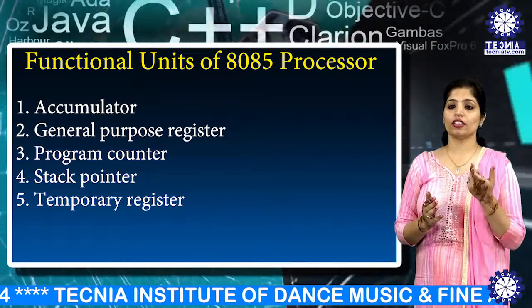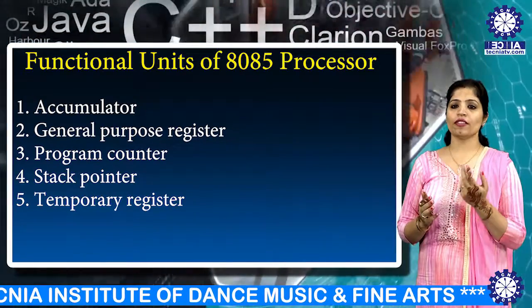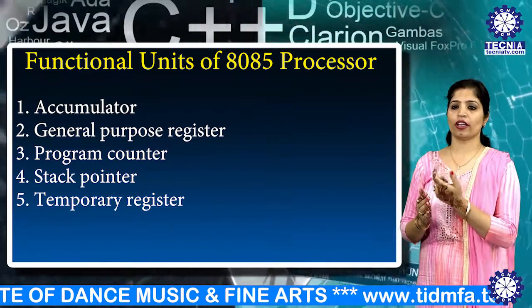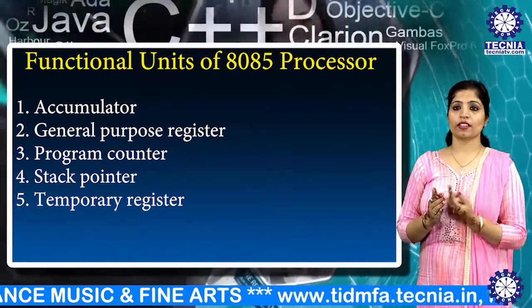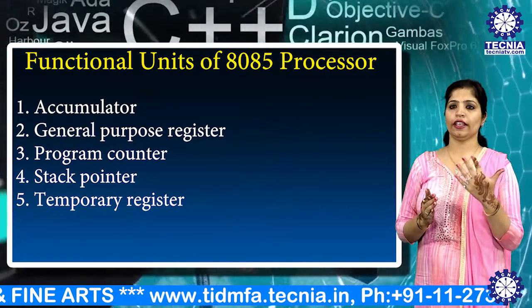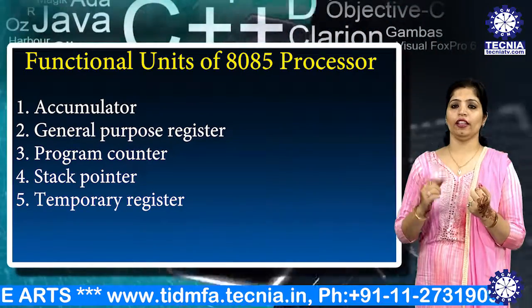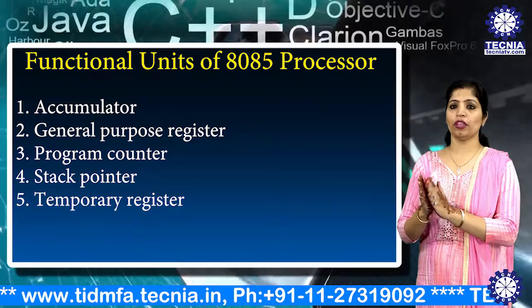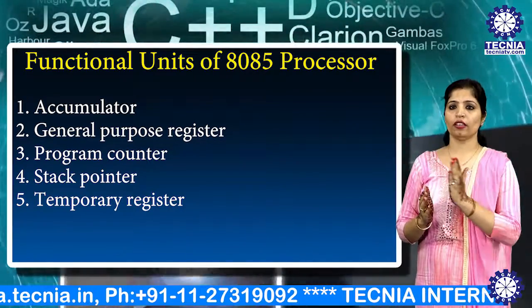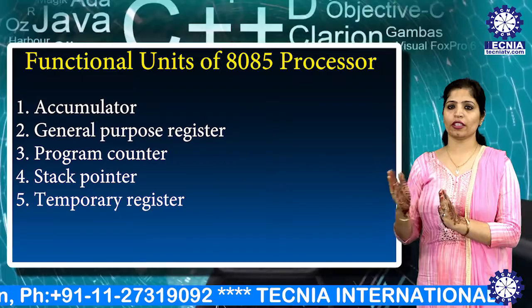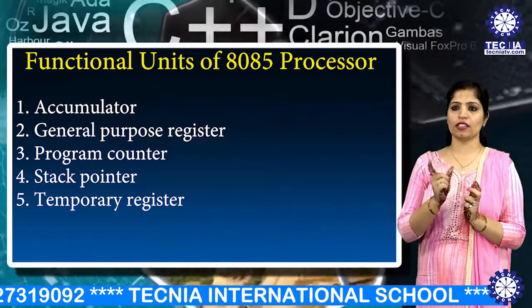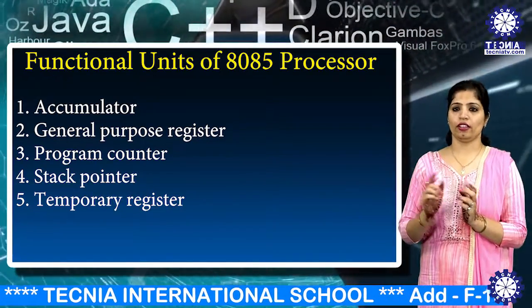The second functional unit is the general purpose register. We have 6 general purpose registers in the 8085 microprocessor: B, C, D, E, H, and L. Each register can hold 8-bit data. These registers can work in pairs to hold 16-bit data, and their pairing combinations are BC, DE, and HL.